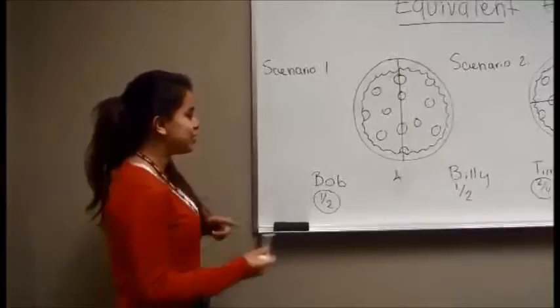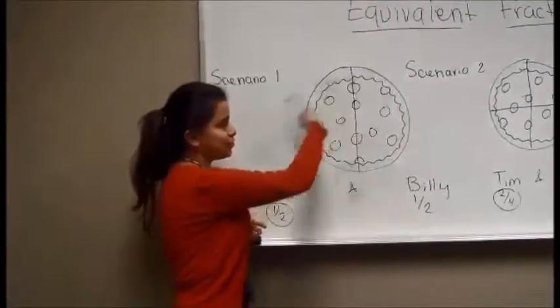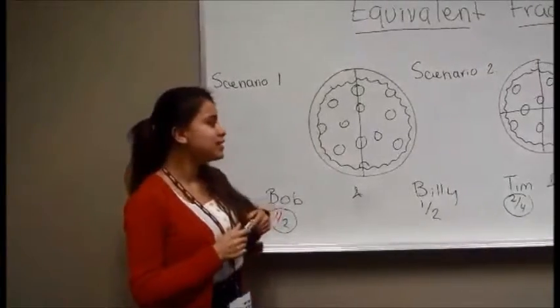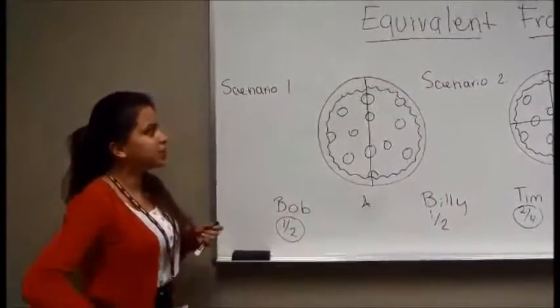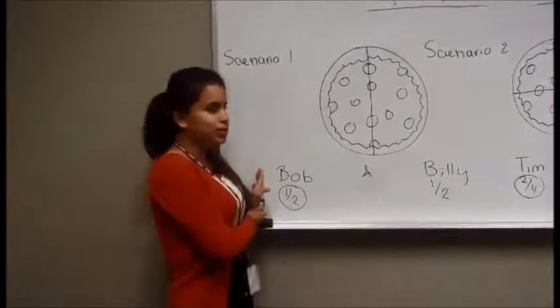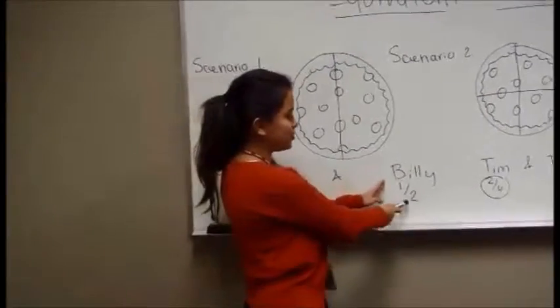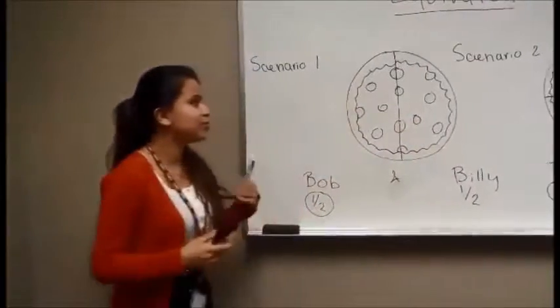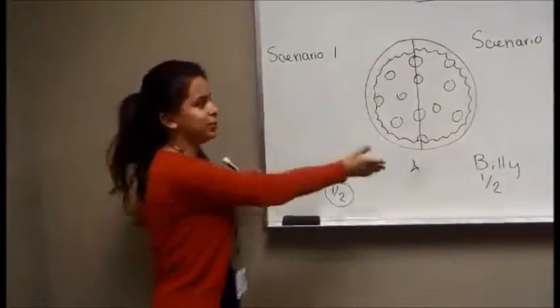Let's pretend that we have Bob and Billy, and they have one pizza. They want to share it equally, and they decide that they're going to cut the pizza in one half. So Bob is going to get one out of the two, and Billy is going to get the other slice. So now they have one half and one half.